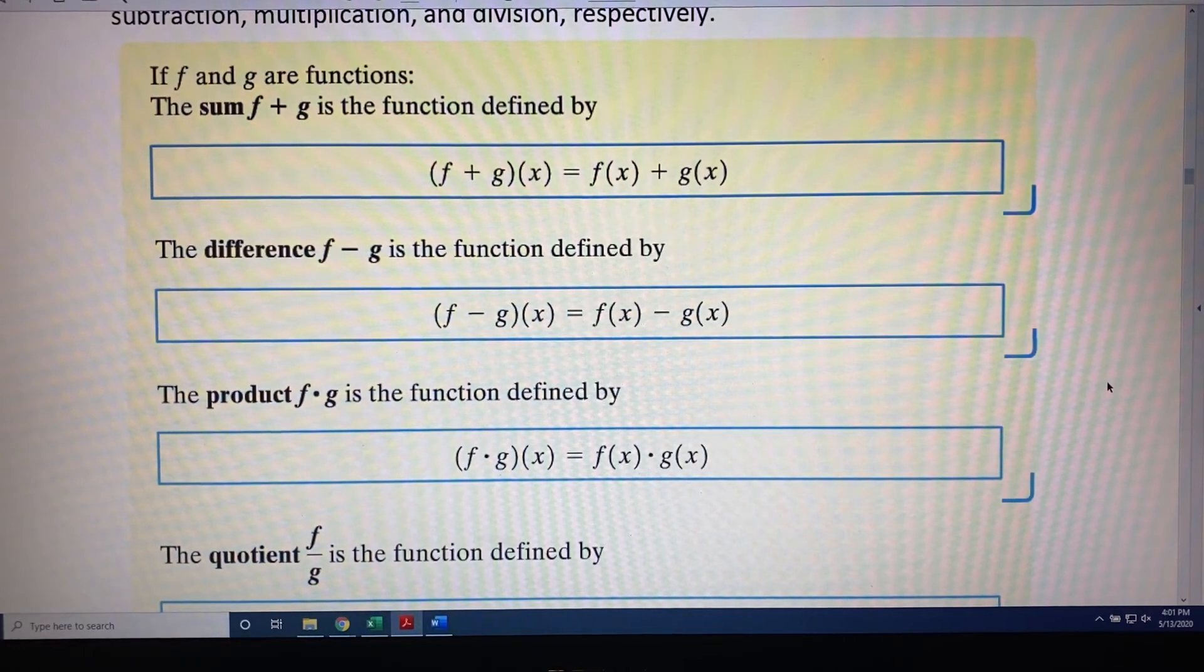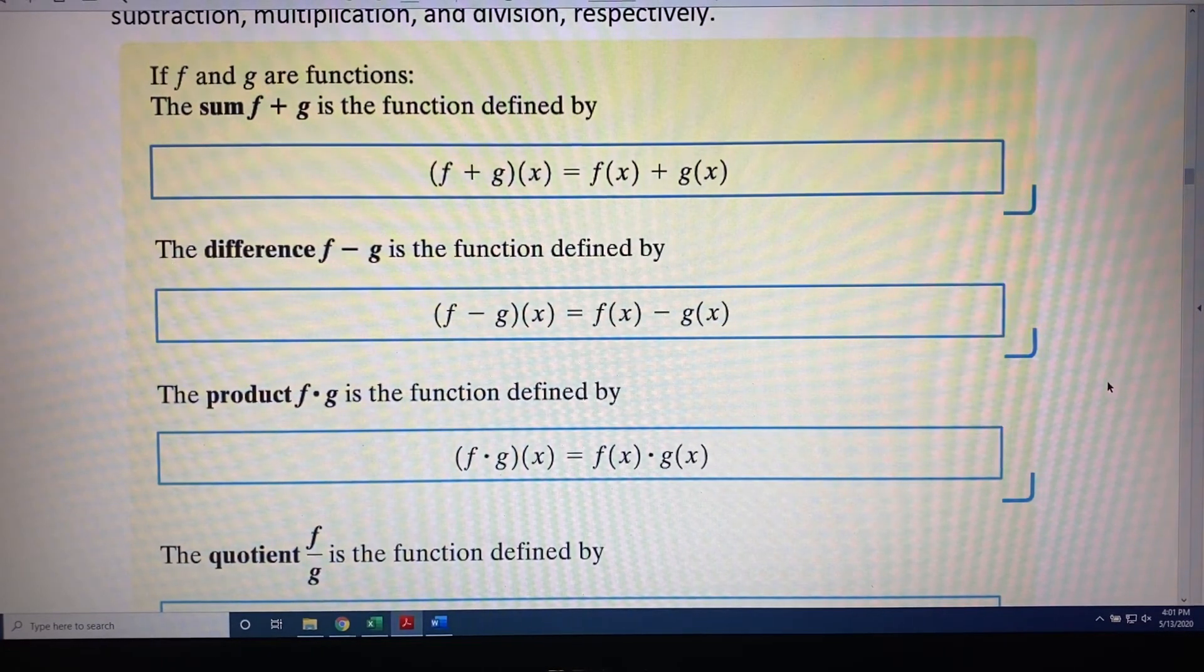The product f dot g is the function defined by f dot g in parentheses of x equals f of x times g of x.